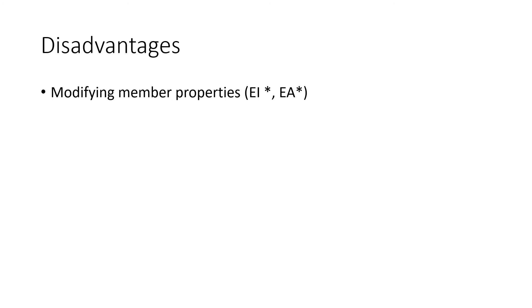However, the direct analysis method does have drawbacks. It requires the additional step of modifying member properties in the computer model input, and care must be taken to always use the correct nominal properties in serviceability checks or in checking member sizes for code conformance. Application of tau_b is an extra iterative step in the design process, though it can be eliminated by increasing notional loads by an additional 0.1% of gravity loads added to each load combination — however, this additional notional load impacts all elements in the lateral load-resisting system, not just the highly loaded members.